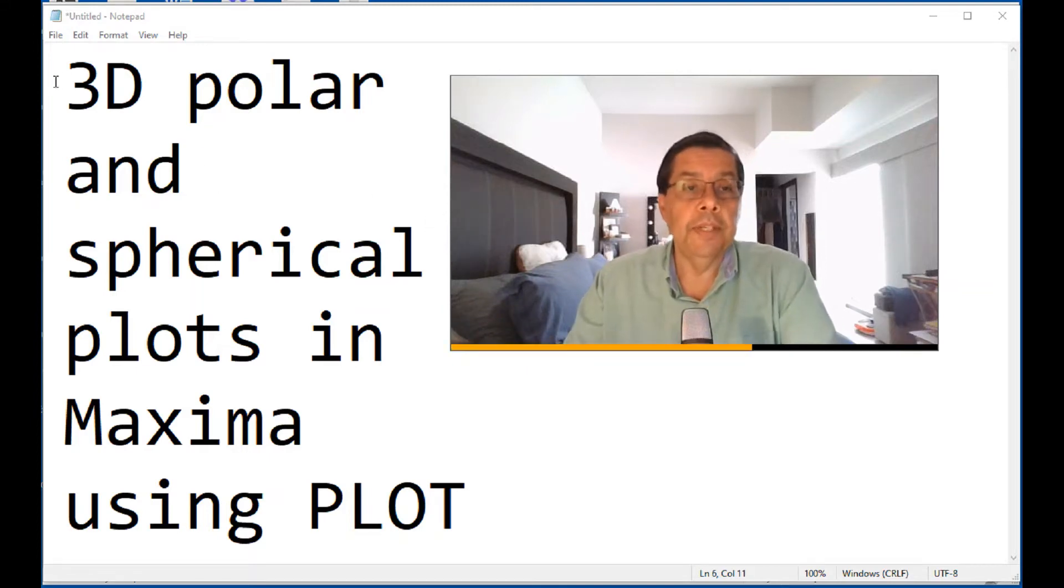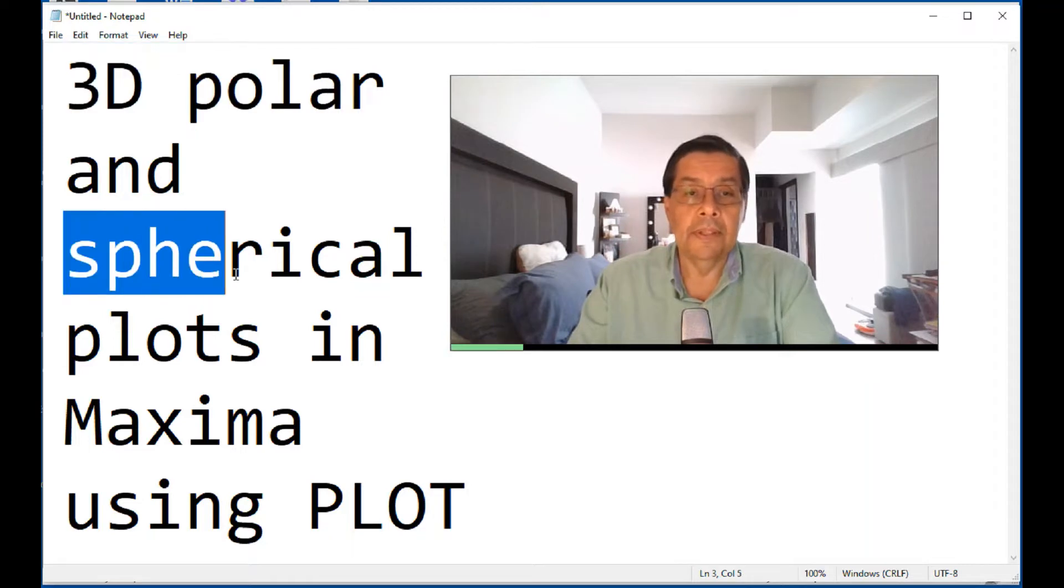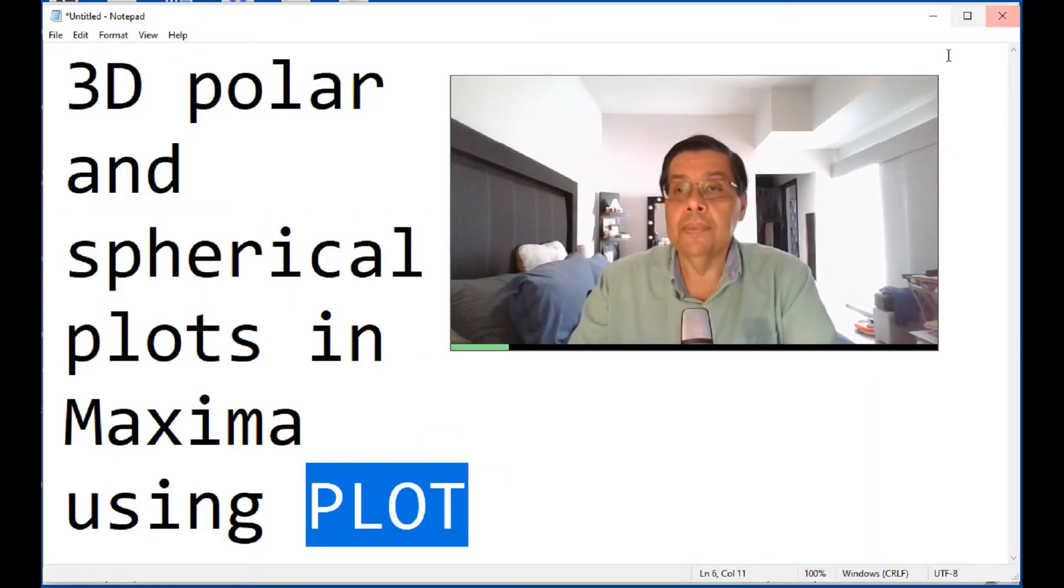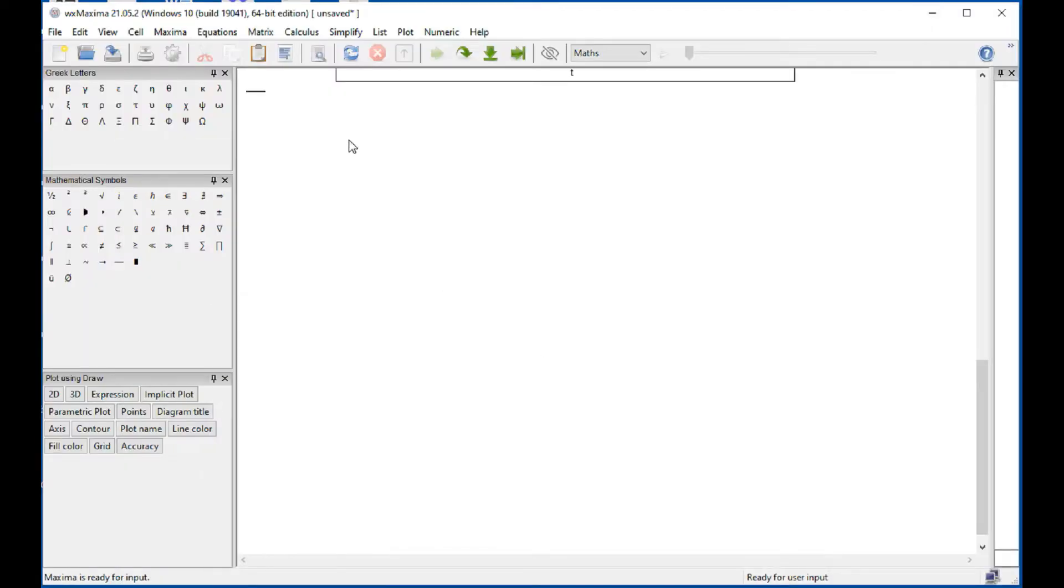In this video we're going to try some three-dimensional polar and spherical plots using the plot commands. Let's get going by going into the WX Maxima interface and then we go into the plot menu and click plot 3D.